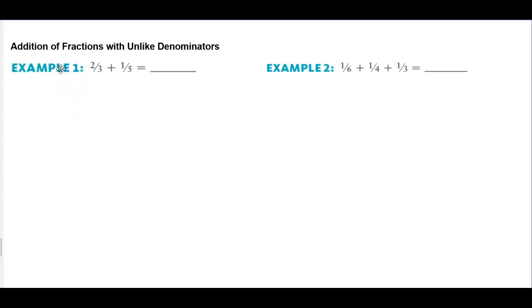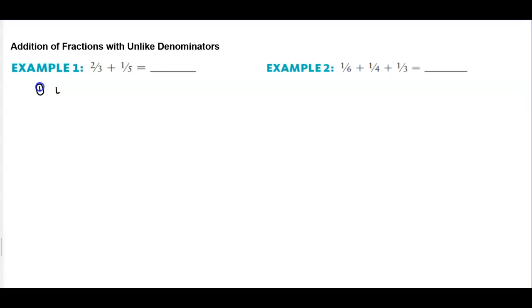Addition of fractions with unlike denominators. For example one, we want to take the fraction two-thirds and add the fraction one-fifth. The first thing we need to ask ourselves is we need to find the lowest common denominator between three and five.